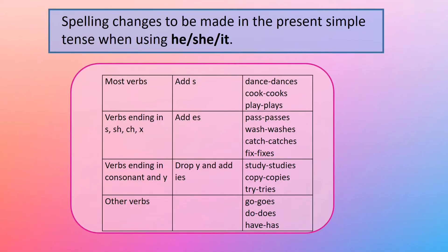There are some other verbs where the ending is different — the word changes completely. For example: go/goes, do/does, and have/has.